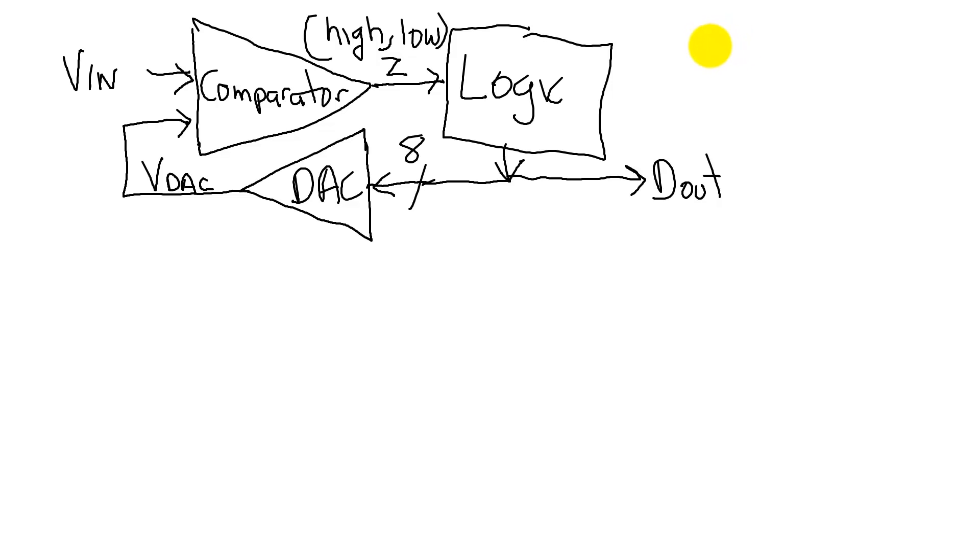So in this video, we will show you the essential process by which the analog-to-digital conversion occurs. This is called successive approximation.